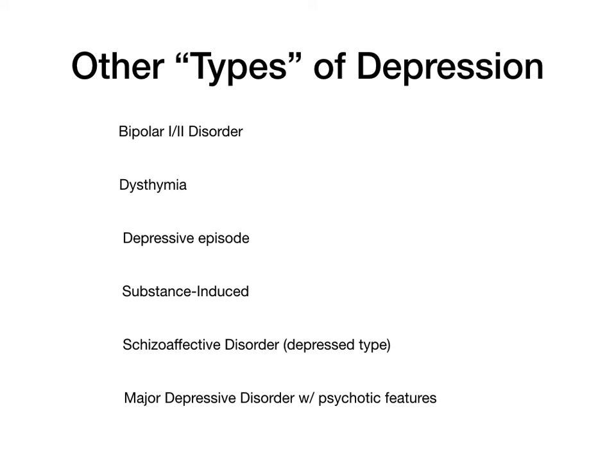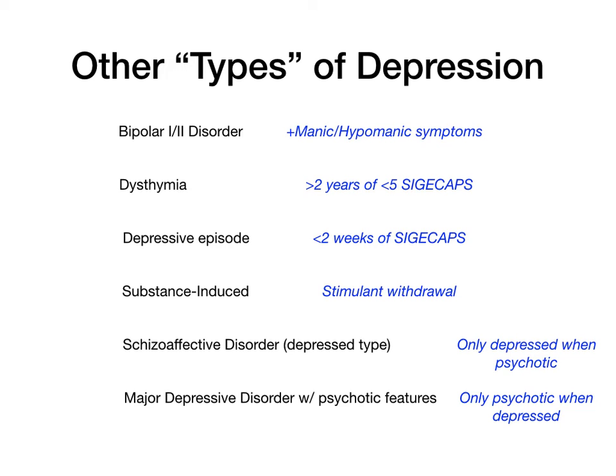Schizoaffective disorder, depressed type: these patients are only depressed when they're psychotic, but they can be psychotic without being depressed. That should be differentiated from major depressive disorder with psychotic features, where the patient only has psychotic episodes when depressed, though they can be depressed without being psychotic. This is the differential for major depressive disorder.